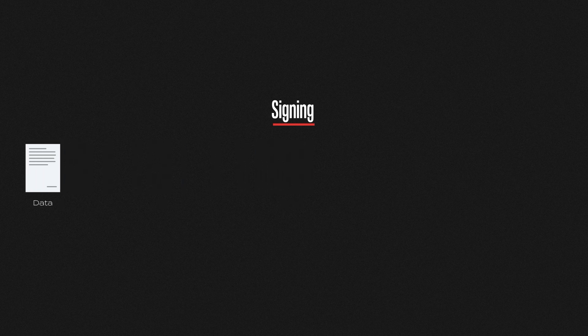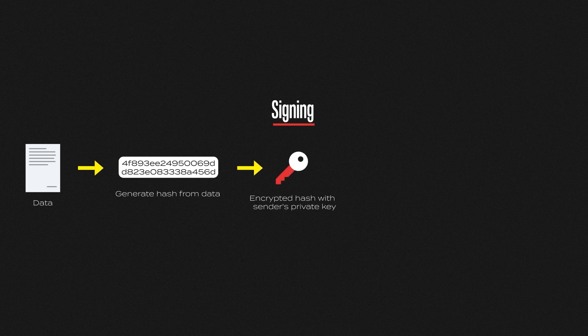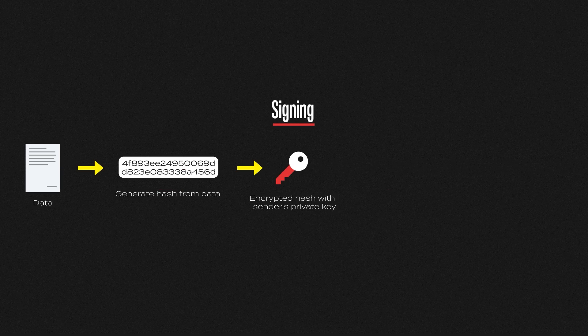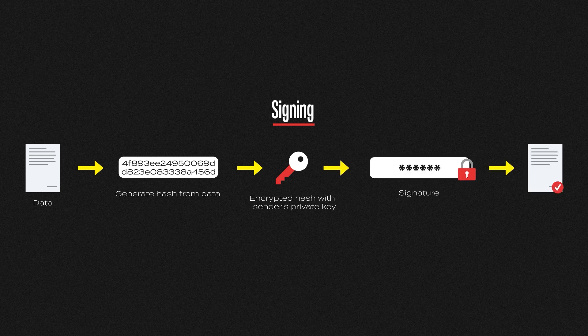A couple of things happen when I do this. First, a hash is made of the document — remember, if any changes are made to this document, no matter how small, the hash will no longer match. The next step is where the magic happens: the hash is then encrypted. We'll talk more about encryption later, but for now all you need to know is there are two keys involved. One key is for encrypting the data and this is called the private key, and the second key is for decrypting the data and this is called the public key. So the hash of the document is encrypted using the private key that only I have — this creates the digital signature.